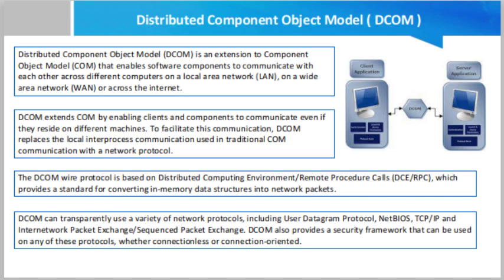COM explains how components and their clients interact — the client and component can connect without the need of any intermediary system. When the client and component are present on different machines, DCOM replaces the local inter-process communication with a network protocol, so neither the client nor the component is aware that the wire connecting them has become a little longer. The COM runtime provides object-oriented services to clients and components and uses RPC and the security provider to generate standard network packets conforming to the DCOM wire protocol standard.